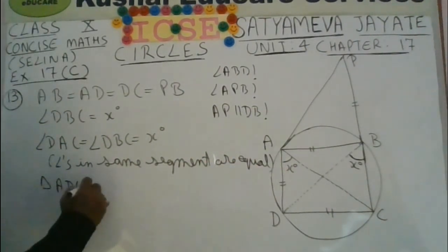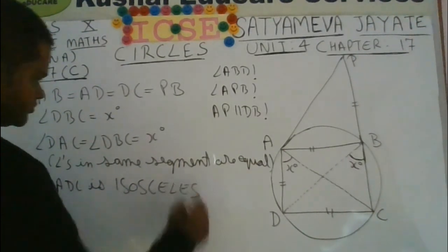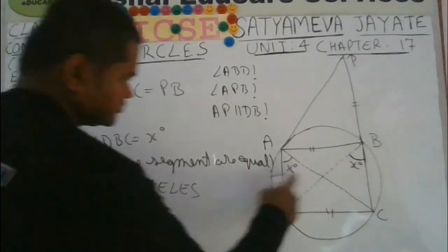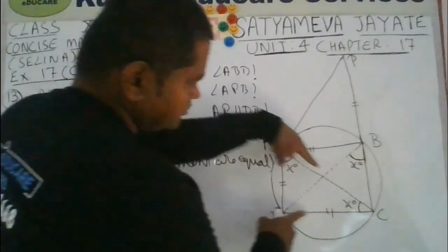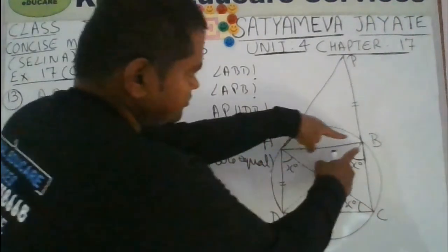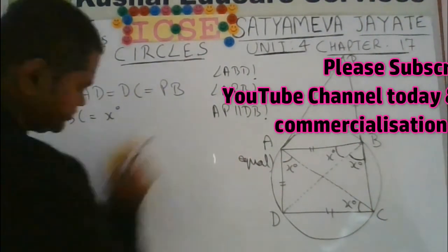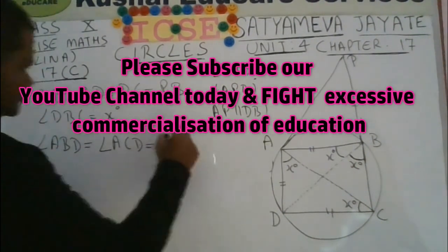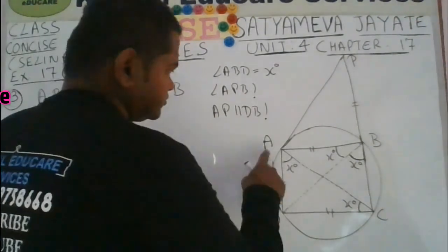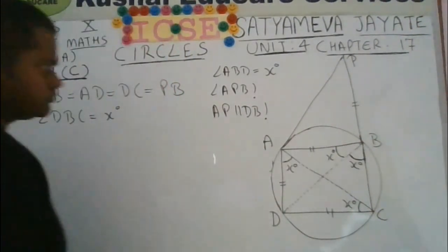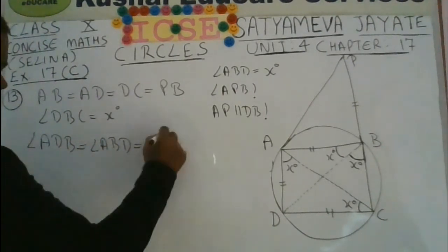In triangle ADC, AD is given equal to DC, which means triangle ADC is an isosceles triangle, so angle ACD will also be x degrees. Now look at arc AD — it subtends angle x at point C. Since angles in the same segment are equal, angle ABD will also be x degrees. Triangle ADB is also an isosceles triangle because AB equals AD, so angle ADB equals angle ABD, that is x degrees.